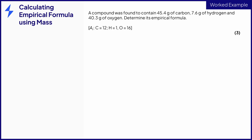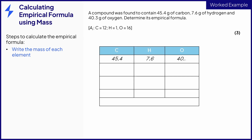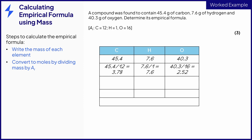This question gives you the mass of each element found within a compound, from which you need to determine its empirical formula. The first step is to write down the mass of each element. It can be useful to draw a table with a column for each element to help set your calculation out. Then divide the mass of each element by its relative atomic mass to give the amount in moles. You would gain one mark with these calculations, but all three values need to be correct to gain this mark.